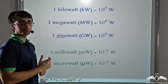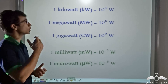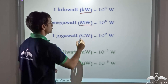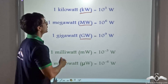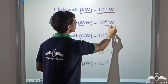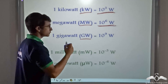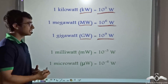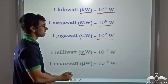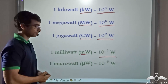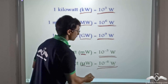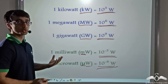There are bigger and smaller units of power. One kilowatt (kW) equals 10³ watts, one megawatt (MW) equals 10⁶ watts, and one gigawatt (GW) equals 10⁹ watts. There are also smaller units: one milliwatt (mW) equals 10⁻³ watts. These are the various units of power used in calculations.